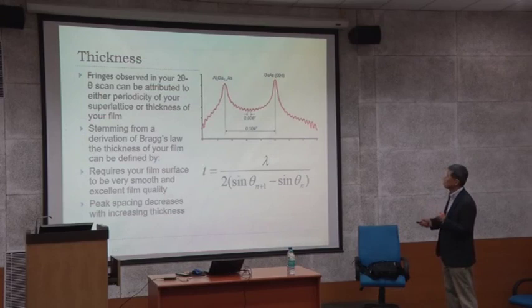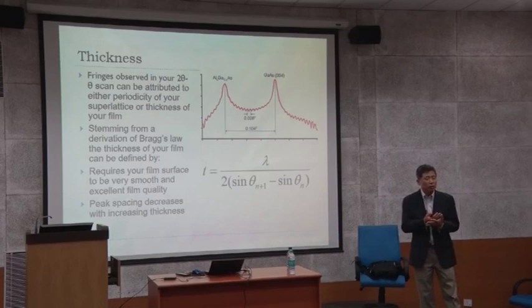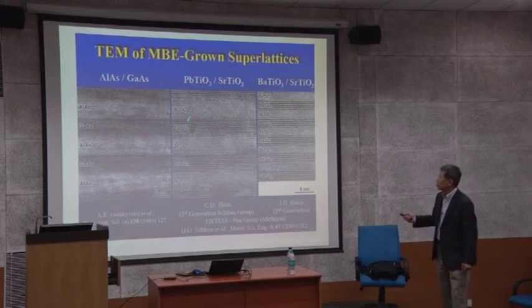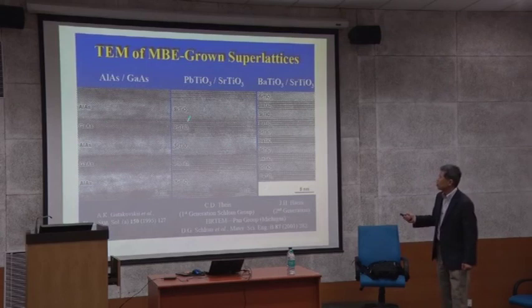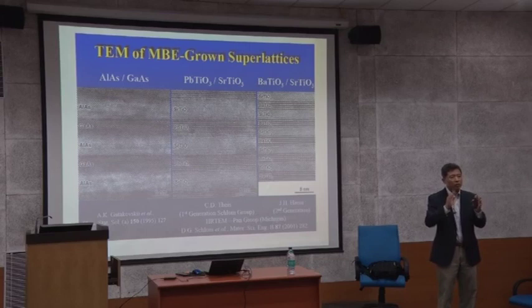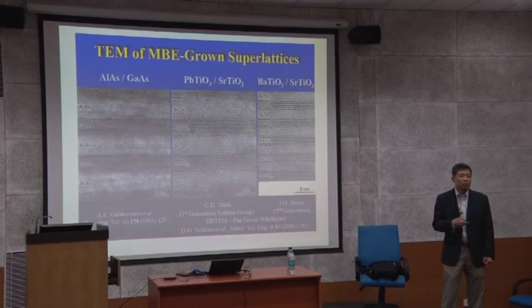Sometimes you grow not only single layers but also superlattices. Superlattices are artificial structures. In the first lecture, I mentioned that these thin film techniques allow you to grow superlattice structures. These can be gallium arsenide superlattices, strontium titanate/lead titanate superlattices, strontium titanate/barium titanate superlattices. As long as you have two sputter guns or two laser targets, you can switch back and forth and make this kind of nice periodic array.